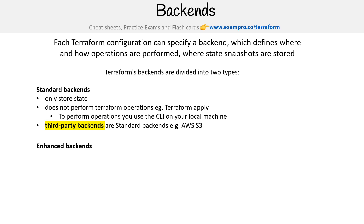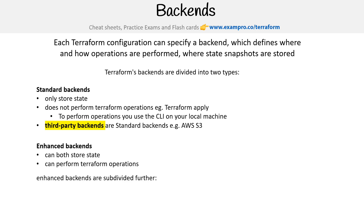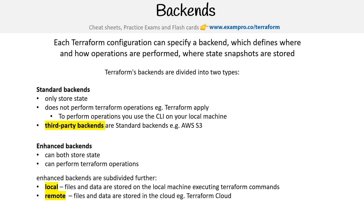When we're talking about enhanced backends, we can store both the state and perform Terraform operations. Enhanced backends are subdivided further: we have local, where files and data are stored on the local machine executing Terraform commands, and remote, where files and data are stored in the cloud — so Terraform Cloud. Local is your machine, so of course it can execute Terraform. Remote is Terraform Cloud, which has its own runtime environment — it's basically a build server — so it can do both those operations. And that's how you're going to remember the difference between those two.